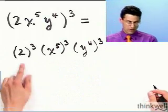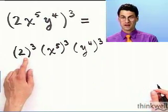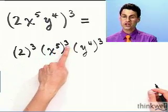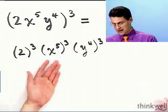And now how are we going to deal with this? Well, 2 cubed, you know, is 8, so that's not a problem. But what about this term right in here? What about x to the fifth cubed? Well, how would you deal with that? Well, again, the way you would think about how that would work is to write it out.